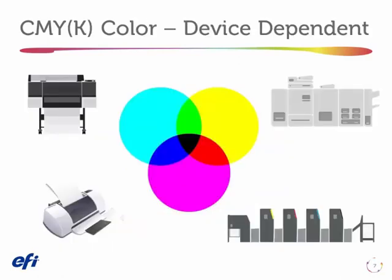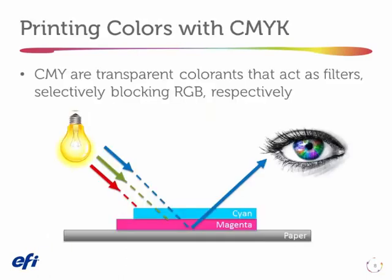Let's talk about another device dependent color model. CMYK is the color model with which we print. Cyan, magenta, and yellow are sometimes called the subtractive color space because as we add these together we go away from white, and when we combine all three of them we get black or approximately black. The way I'm going to use CMYK color is as transparent filters.